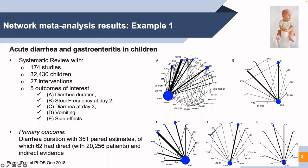Network meta-analysis allows the synthesis of data from a network of studies, facilitating the simultaneous comparison of many interventions for managing a specific clinical condition. An important advantage of network meta-analysis is that it can rank the effectiveness and safety of all the relevant interventions for a clinical condition.